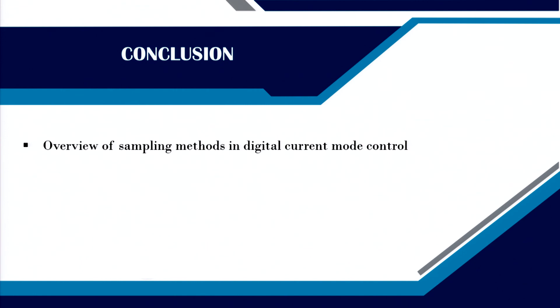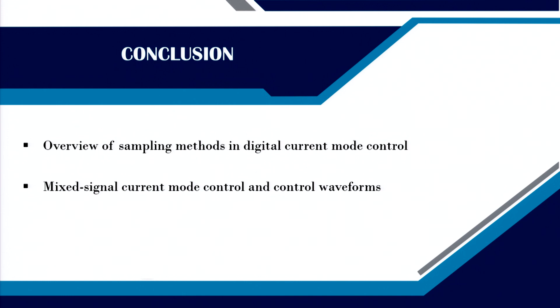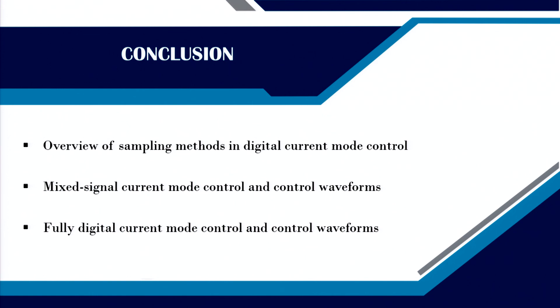In summary, we discussed an overview of sampling methods in digital current mode control, mixed signal current mode control with different control waveforms, and fully digital current mode control — first with same-point sampling which was practically not feasible, then with one-cycle delay for a practical fully digital implementation. We hope to have a good understanding of fixed frequency digital current mode control architecture, which will be summarized in the next presentation. Thank you very much.